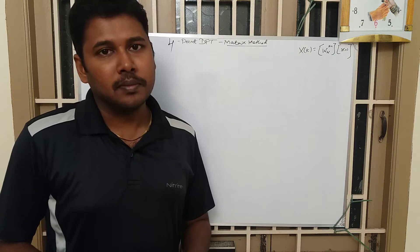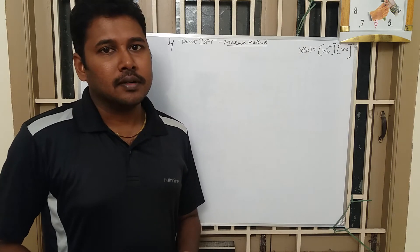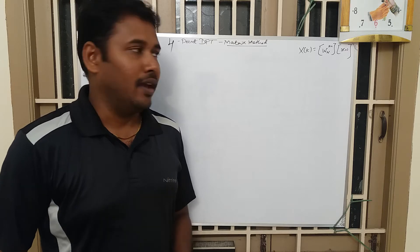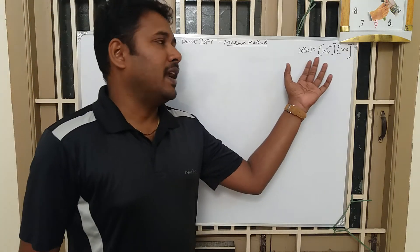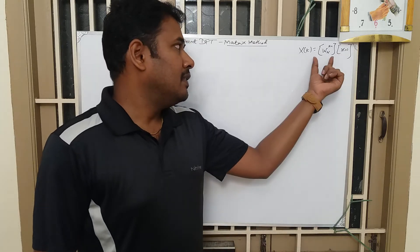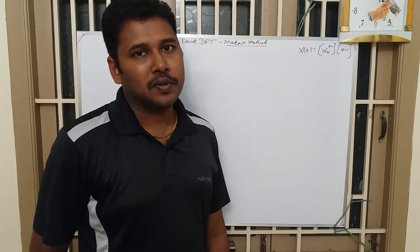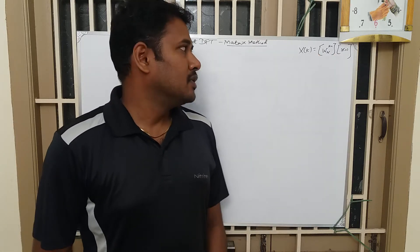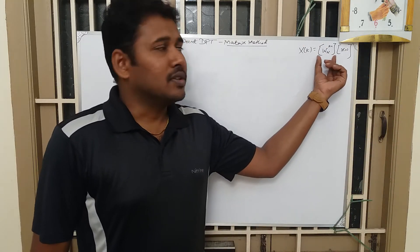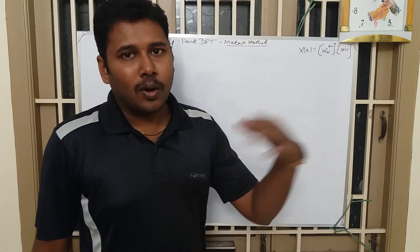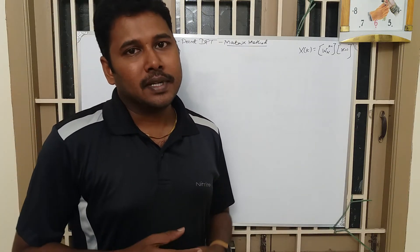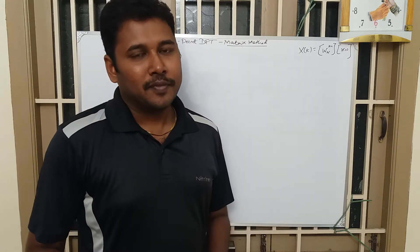In this video, I am going to tell you how to remember the 4-point DFT matrix in an easy way. We know the formula for finding X(k) is W base N to the power k times x(n), and this matrix is going to be the common matrix for all values of x(n). Irrespective of the value of x(n) given in the problem, you can follow the same matrix for solving all the problems. I am going to tell you a shortcut so that you can easily remember the 4×4 matrix without any issues.